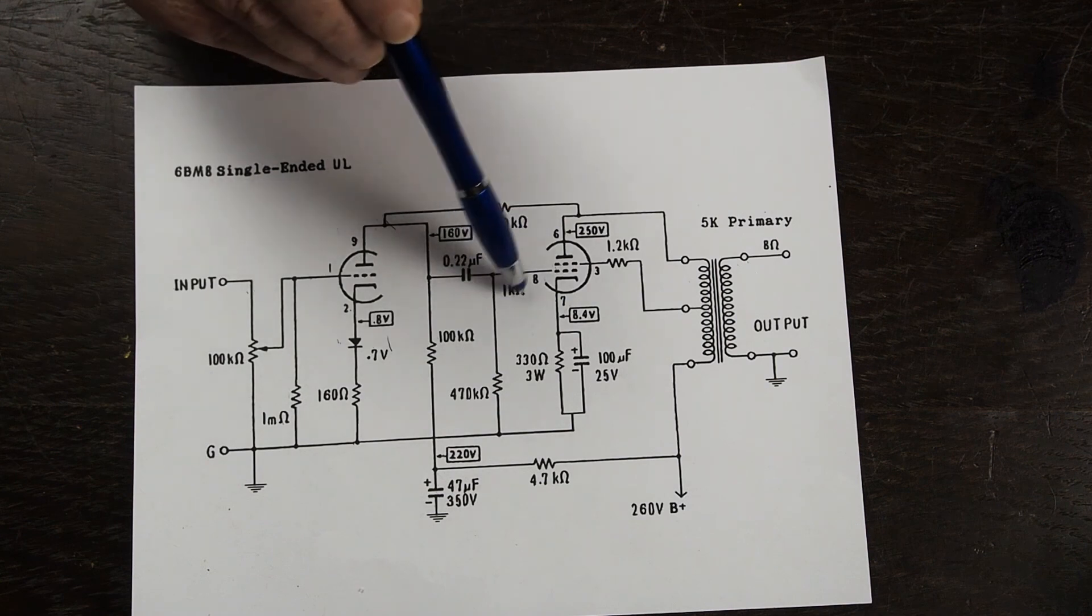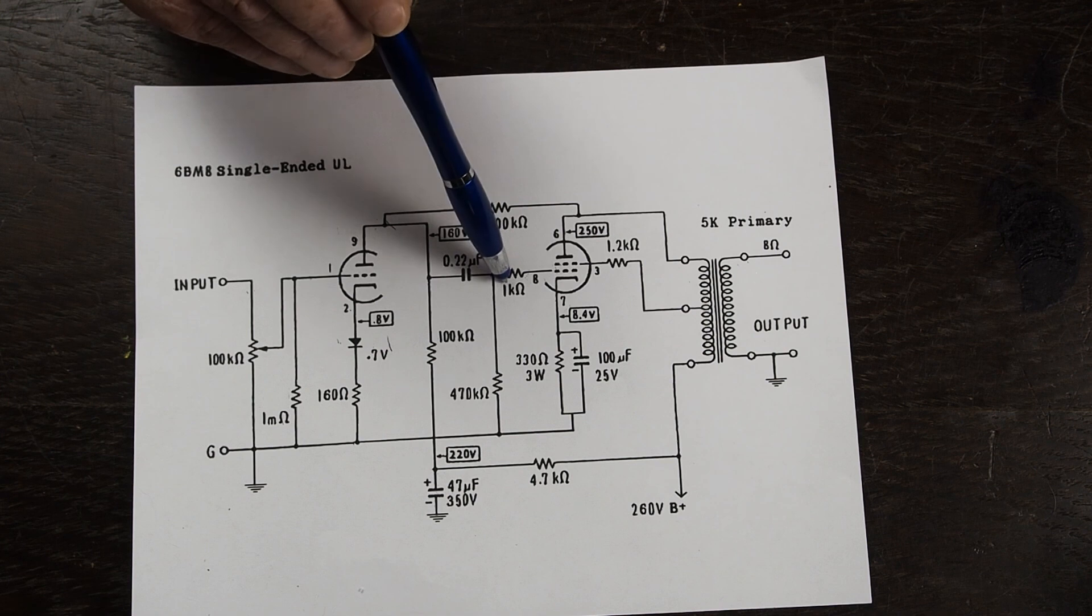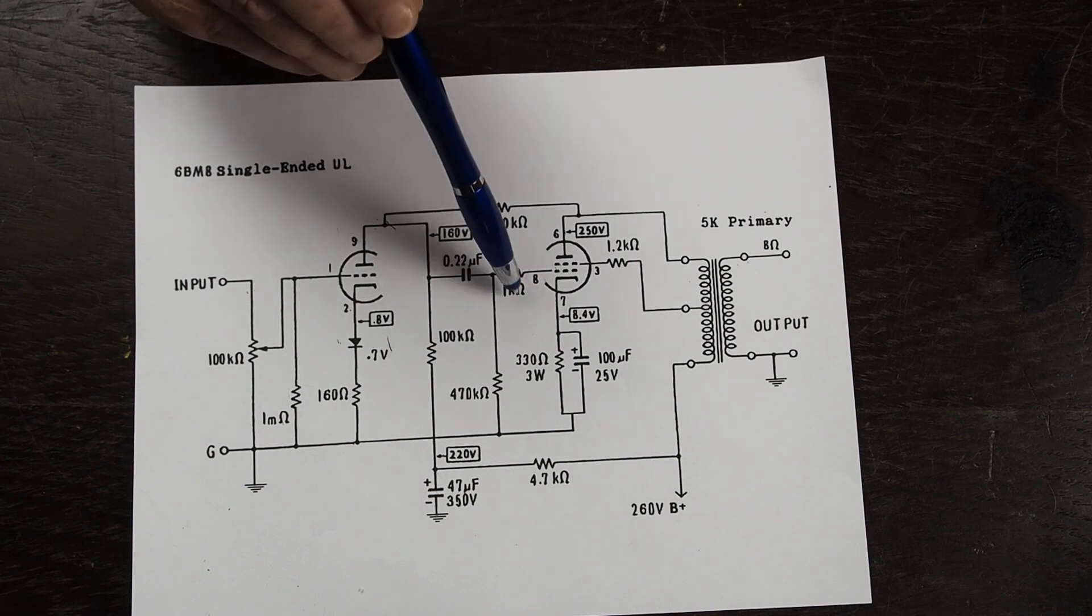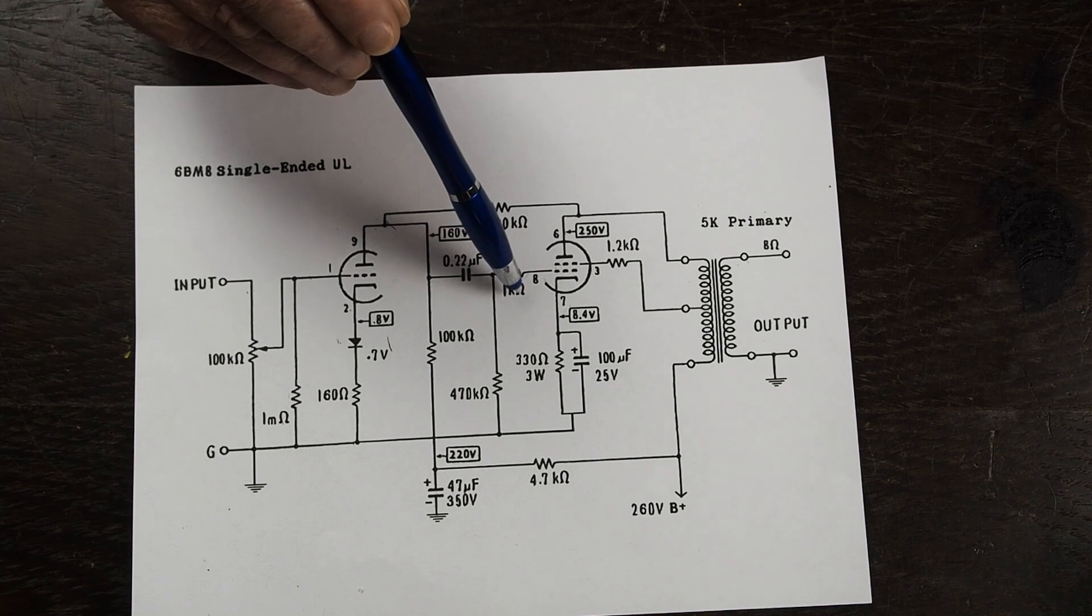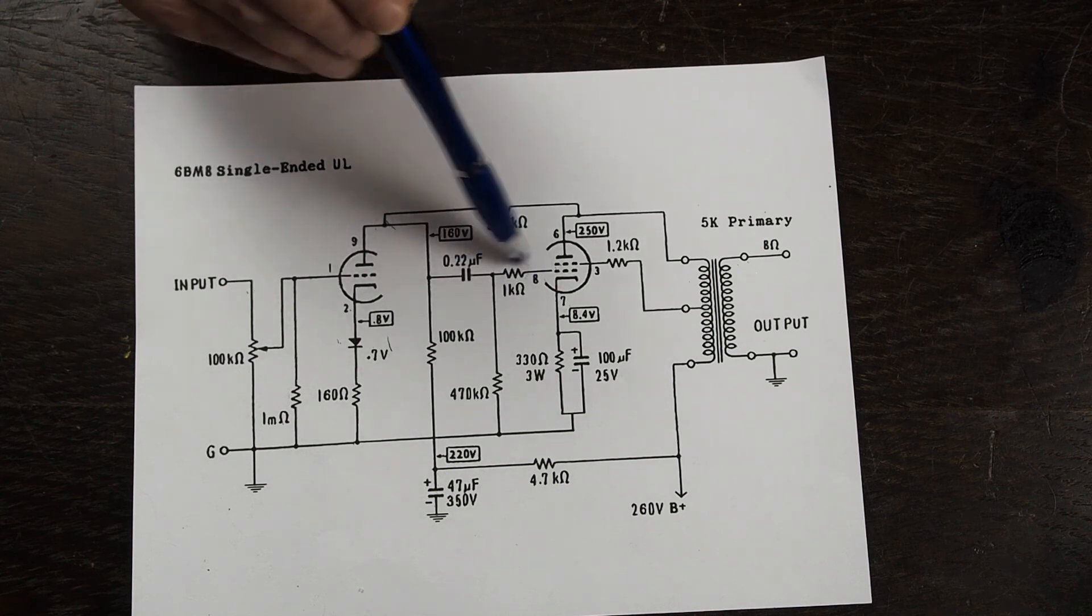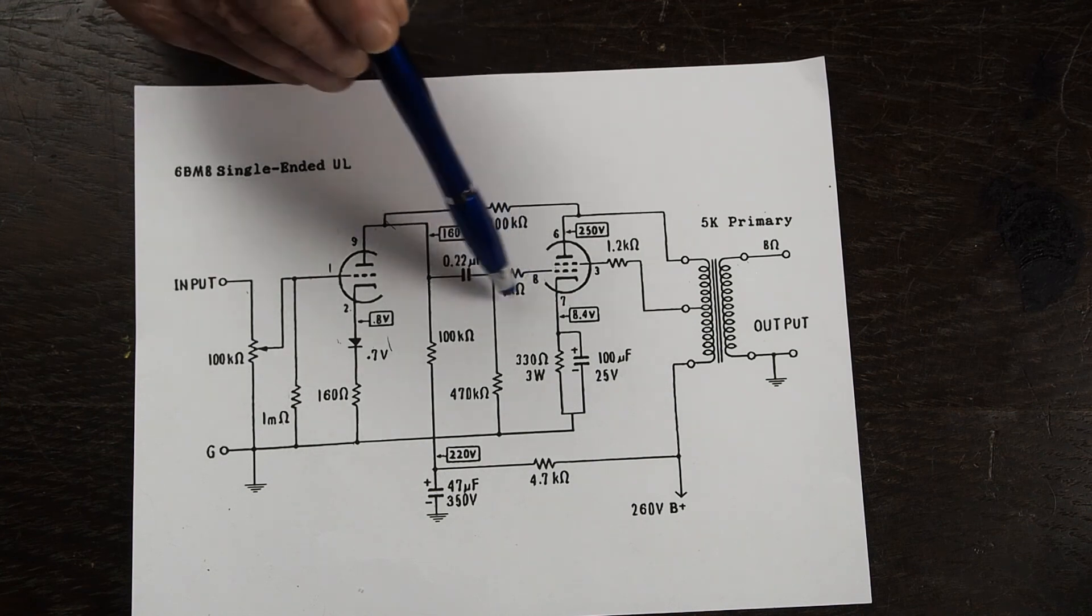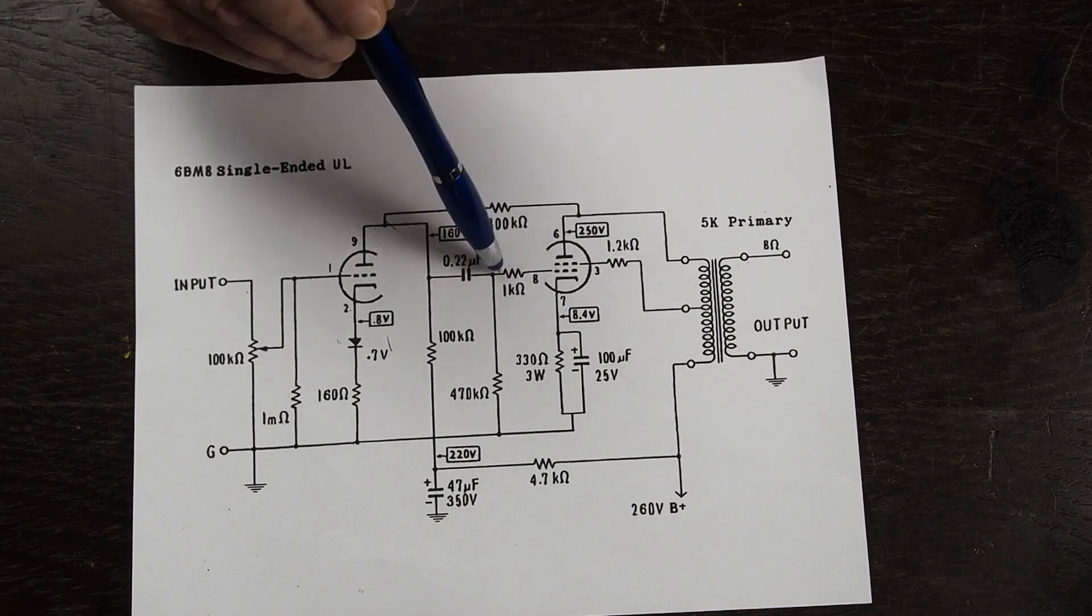This 1k resistor is what's called a grid stopper and it helps keep the amplifier stable and from oscillating which probably isn't as big a deal on this amplifier design as on some, but it doesn't hurt anything to put this in the circuit and it's something I just like doing on the amplifiers I build to make sure that they remain stable.